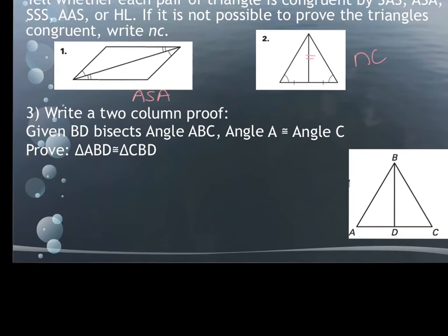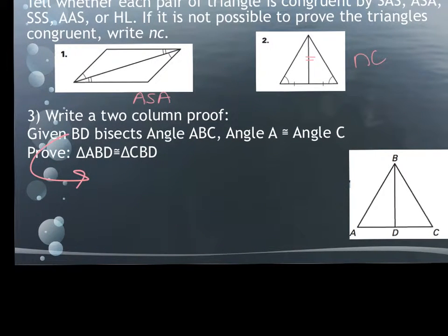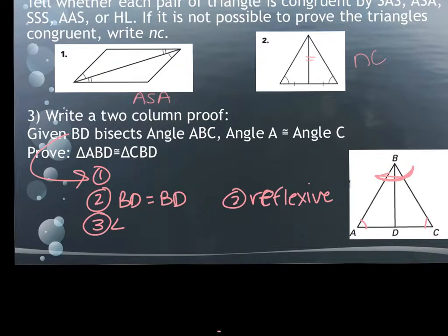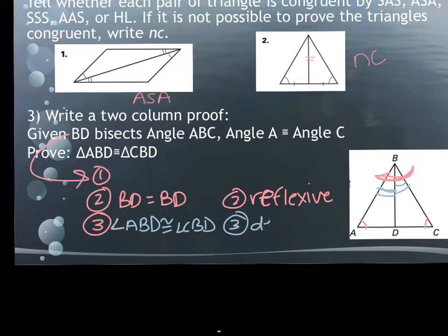Number three says write a two-column proof given that BD bisects angle ABC, and angle A is congruent to angle C, and you want to prove that the two triangles are congruent. State the obvious — the reflexive side, BD equals BD. Then angle BD bisects ABC, which is this big angle up here, cutting it into two congruent parts. So I could say that angle ABD is congruent to angle CBD, and that reason is definition of a bisector.